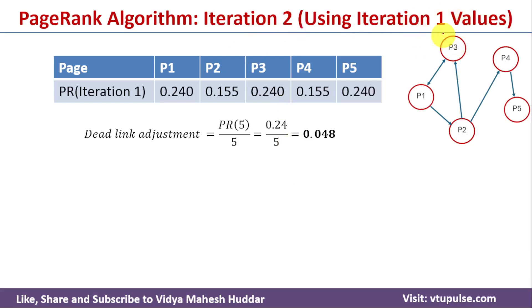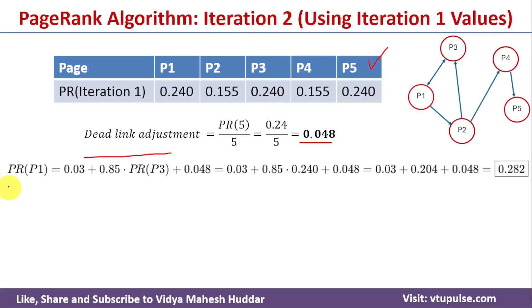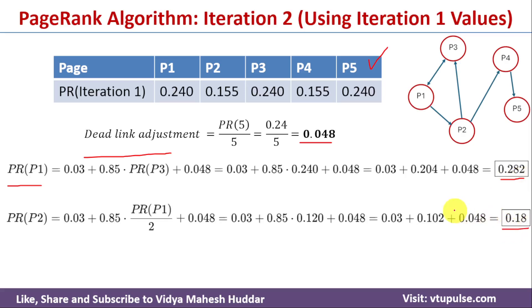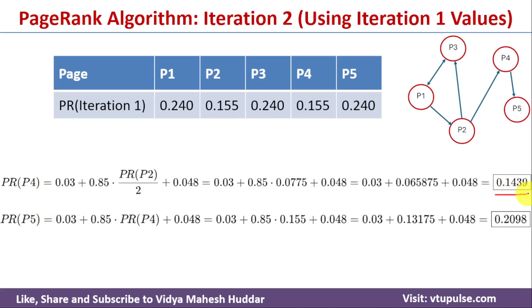Next we find the second iteration values using the first iteration results. First, we recalculate the dead link adjustment: PageRank(P5) / 5 = 0.240 / 5 = 0.048. Using this and the first iteration values, we get: PageRank(P1) = 0.282, PageRank(P2) = 0.180, PageRank(P3) = 0.2459, PageRank(P4) = 0.1439, PageRank(P5) = 0.2098.